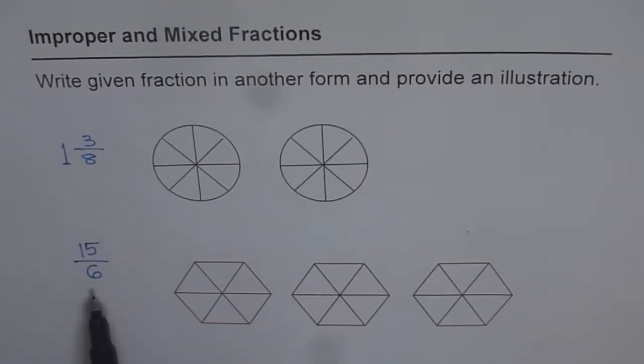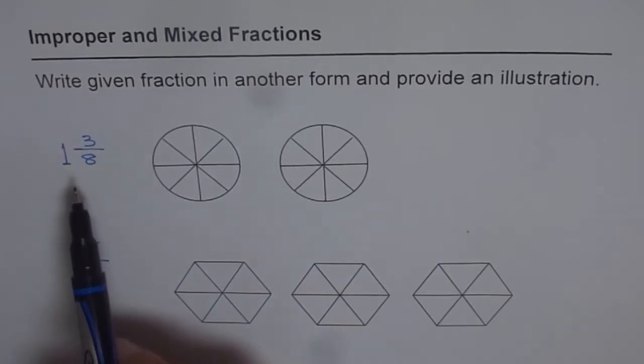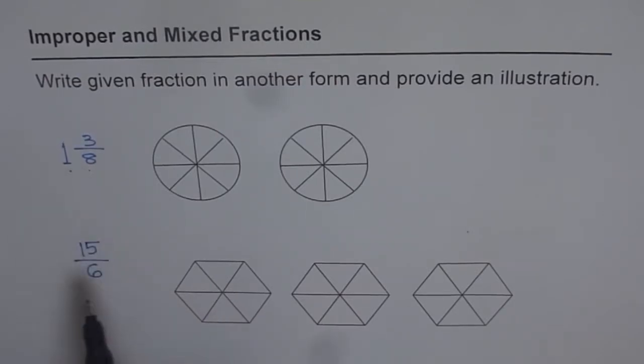What we need to do here is, now this one is which form? Is it mixed or improper? It is mixed since it has got whole number and a fraction. This one is improper since numerator is greater than denominator. So we have two different types of fractions given on this sheet.